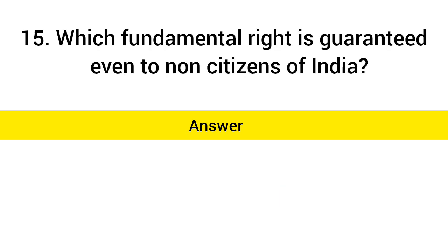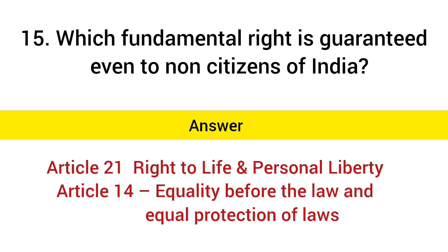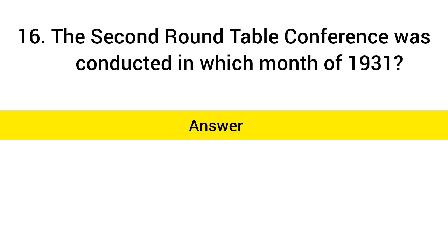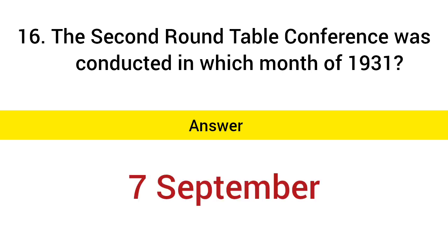Which fundamental right is guaranteed even to non-citizens of India? Answer: Article 21 – Right to Life and Personal Liberty, and Article 14 – Equality before the Law. The Second Round Table Conference was conducted in which month of 1931? Answer: 7th September.